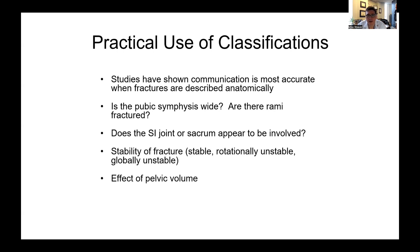There have been a lot of studies looking at how classification systems are applied, and there's a lot of variability. So instead of relying purely on a classification system, I think it's better to use descriptive terminology. Is the anterior injury the pubic symphysis? Are there rami fractures? Is it a volume-increasing injury where things are spread apart, or is it something where things are crunched together? What is the posterior injury, and is it displaced? Do you see a sacral fracture? Do you see a sacroiliac injury? And overall, what's the global stability — is the pelvis rotationally unstable or is there a vertical component?